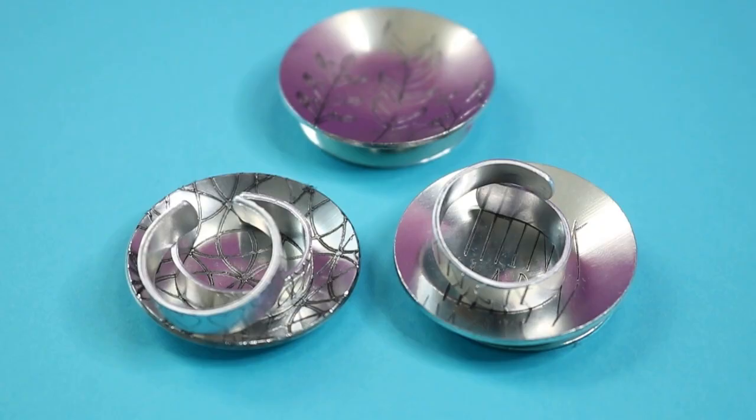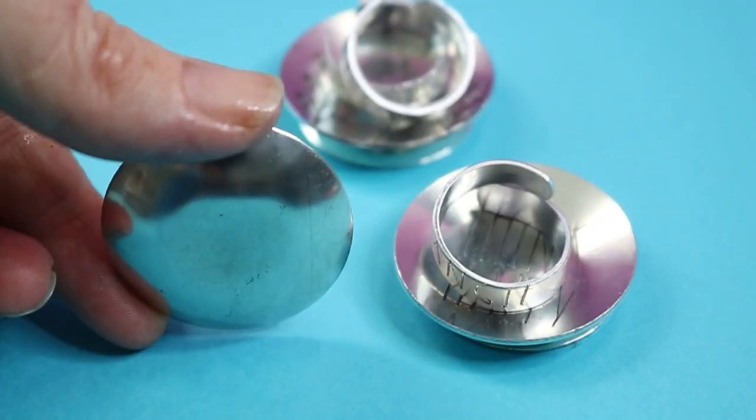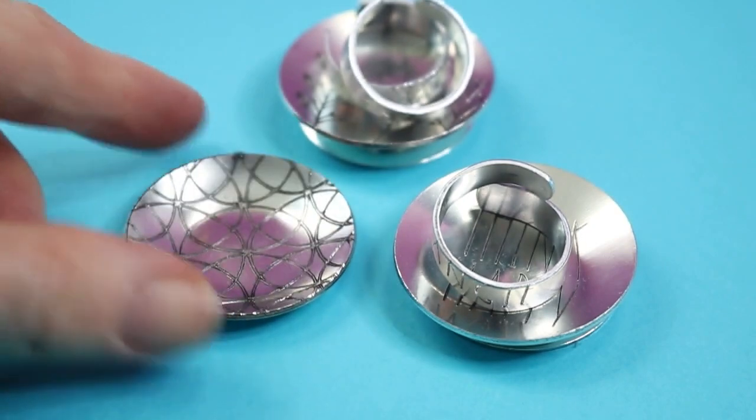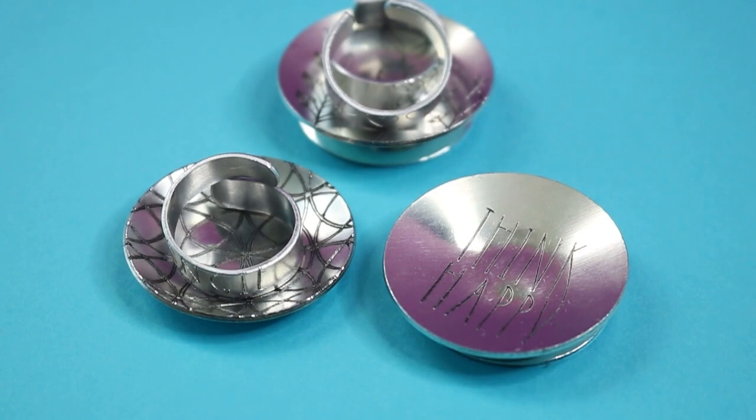So these ring dishes are complete. So I wanted to show you that this one I did not add the base to. So on this one, I just flattened the bottom slightly and then you can just set that right on your table and you have a ring dish ready for your rings wherever you would like them.